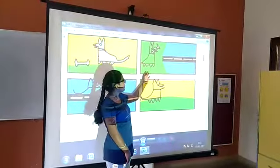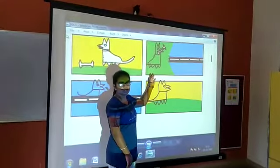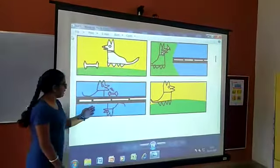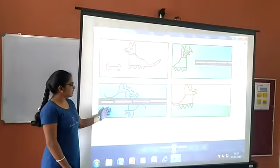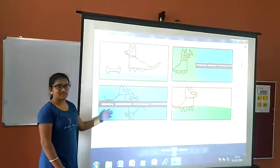When it was going to its home, there was a bridge in the middle of its home. And when in the water, it saw its own reflection and thought that there is a dog with a bone and it started barking.